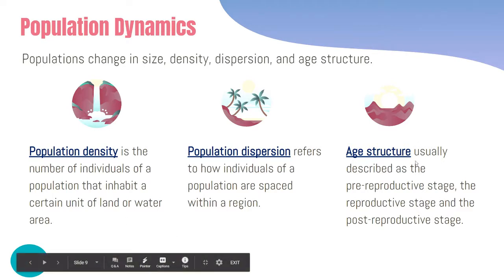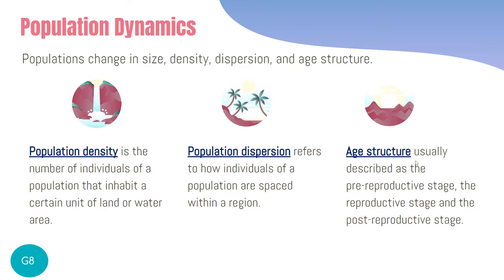The last factor is age structure, which groups the population into three categories based on reproductive status. The pre-reproductive stage includes those who cannot reproduce yet — the children, babies, and young ones. The reproductive stage includes members who can already reproduce — young adults. The post-reproductive stage includes those who can no longer reproduce, such as the elderly and post-menopausal females.